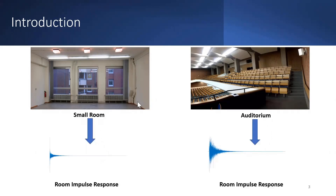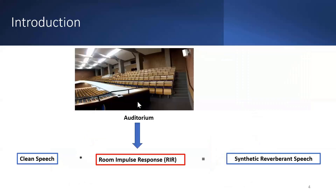The reverberation effects corresponding to the acoustic environment are characterized by a transfer function known as the room impulse response. We can see that the room impulse response function corresponding to a small room is significantly different from the room impulse response from an auditorium. If we know the room impulse response for a given acoustic environment, we can augment reverberant speech by convolving any clean speech with the room impulse response.